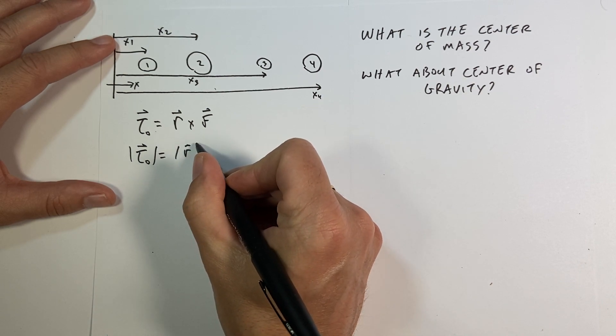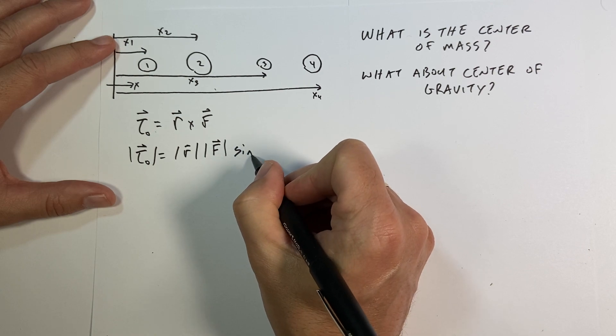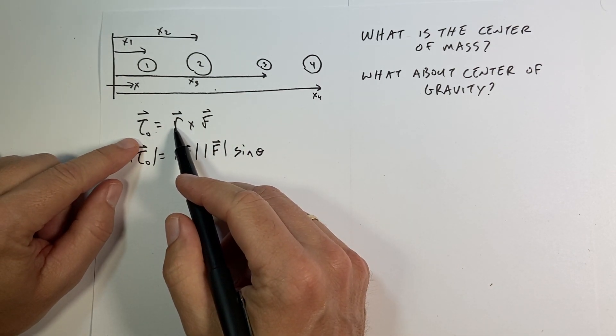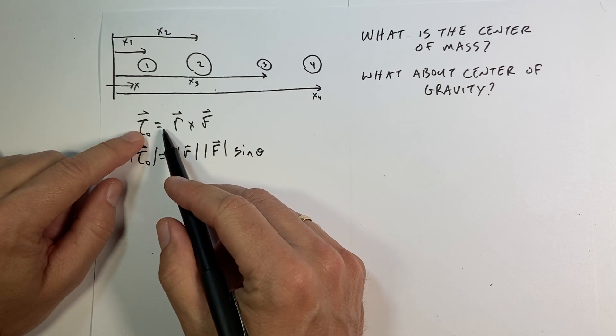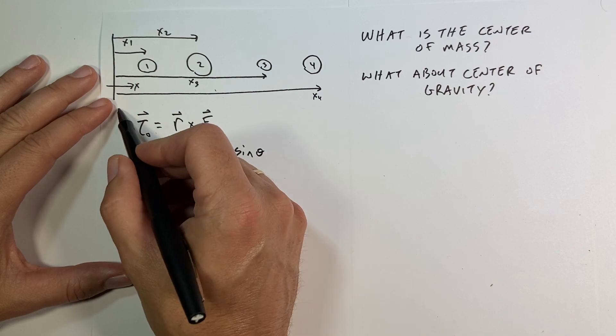So the magnitude of the torque is going to be the magnitude of R times the magnitude of F times the sine of the angle between R and F, where R is the vector from the point of rotation, the point where you want to calculate the torque, to the force. That's torque.